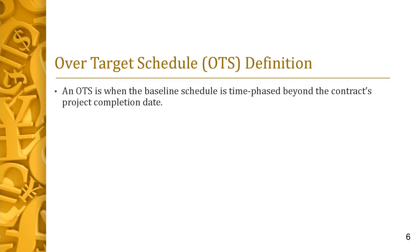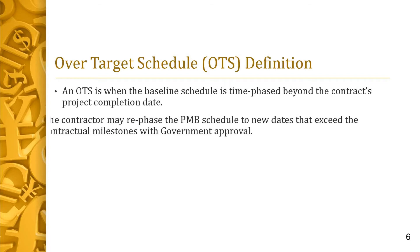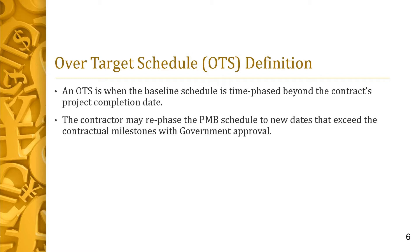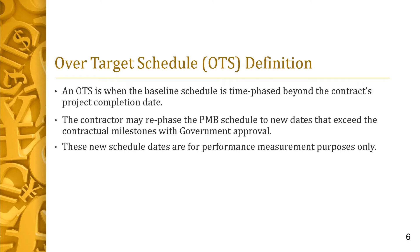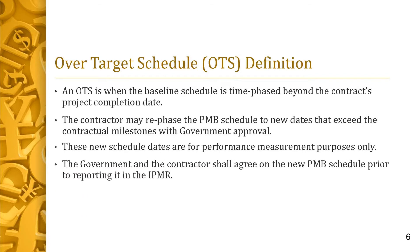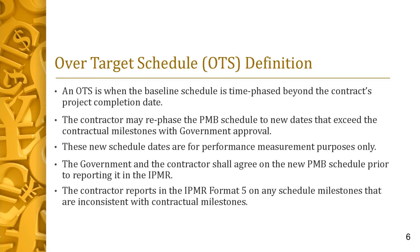An over-target schedule (OTS) is a condition where the baseline schedule is time-phased beyond the contractual project completion date. The contractor may re-phase the PMB schedule to new dates that exceed the contractual milestones — a condition known as an OTS — with government approval. However, these new schedule dates are for performance measurement purposes only and do not represent an agreement to modify the contract terms and conditions. In accordance with the DOE IPMR instructions, the government and the contractor shall agree on the new PMB schedule prior to reporting it in the IPMR. The contractor shall provide pertinent information in Format 5 on any schedule milestones that are inconsistent with contractual milestones, beginning the month the OTS is implemented and each month thereafter.